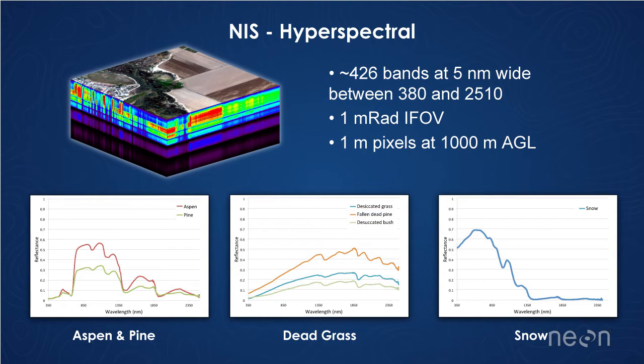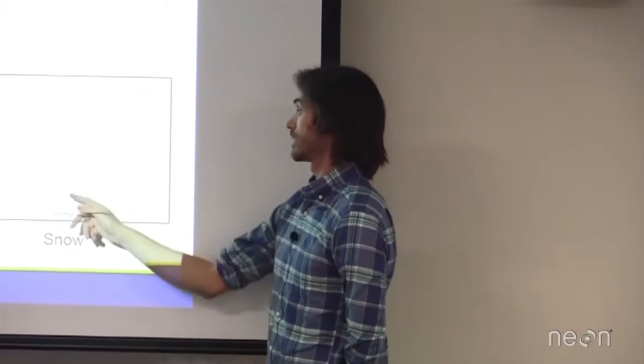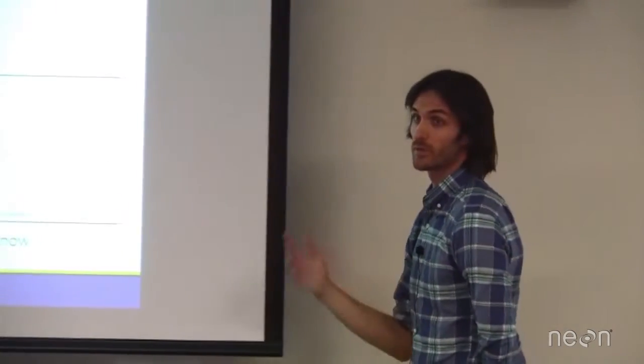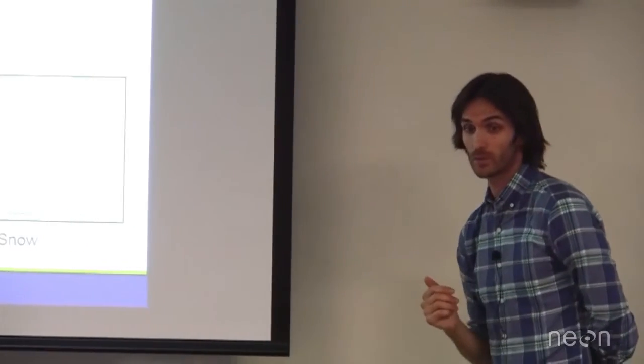One thing that might be interesting to note here is that we have something like snow here in this last curve. So remember when we see snow, we see it as white because it's reflecting really well in this visible portion of the spectrum. But if you go way down here into the infrared portion, snow does not reflect very well. And so if you were actually able, if your eyes were able to see in this portion, then snow would look black to you as opposed to white.